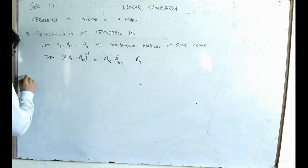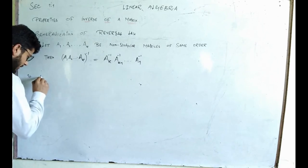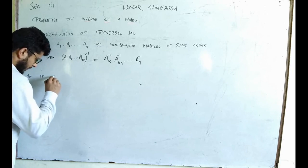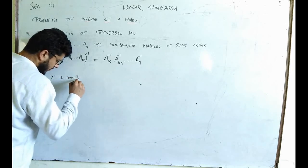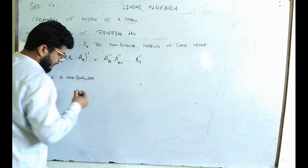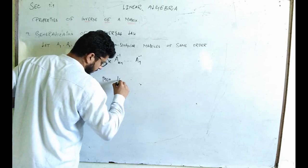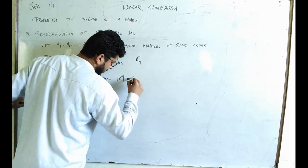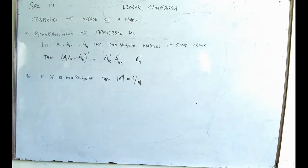Property number ten: if matrix A is non-singular, then the determinant of A inverse equals one divided by the determinant of A. No need to prove this.